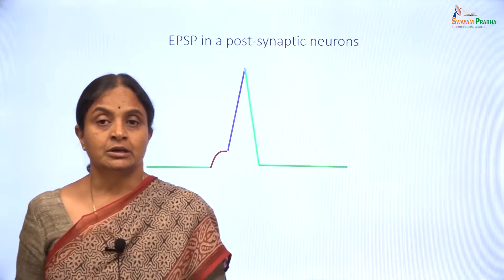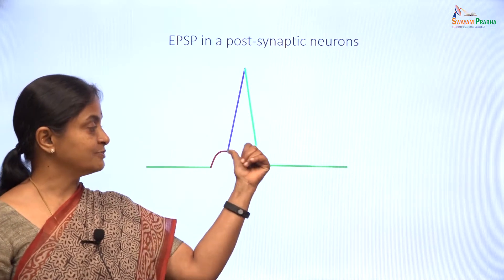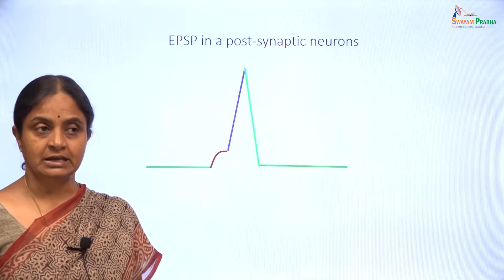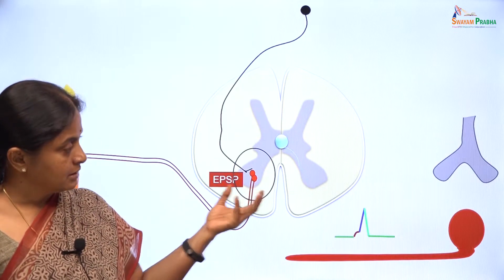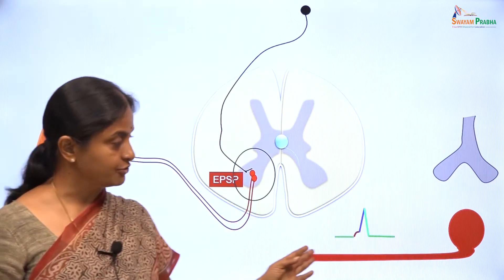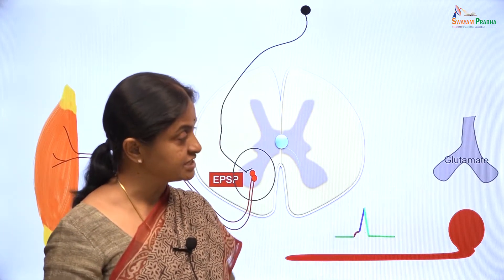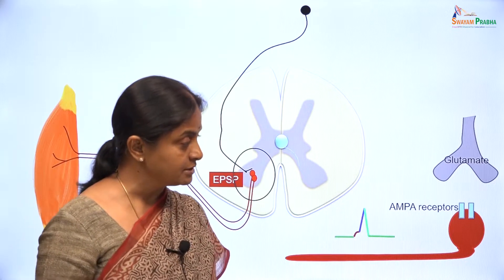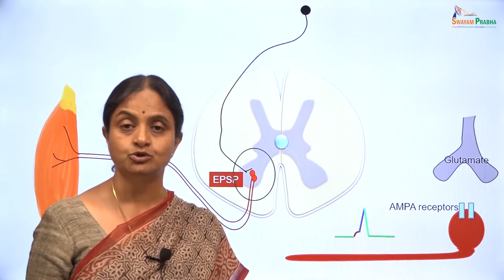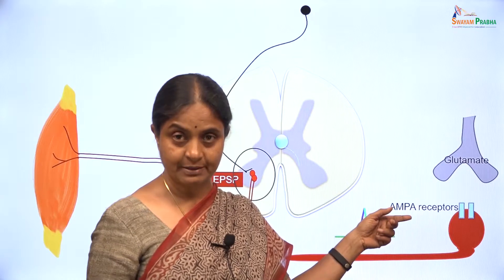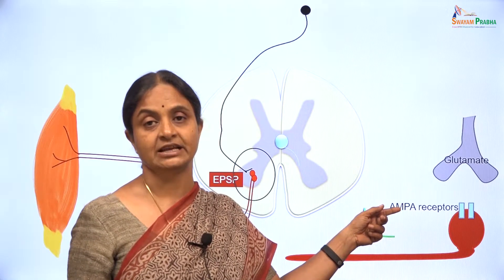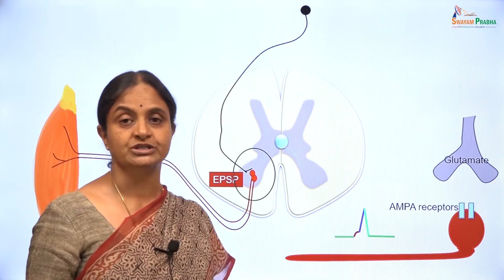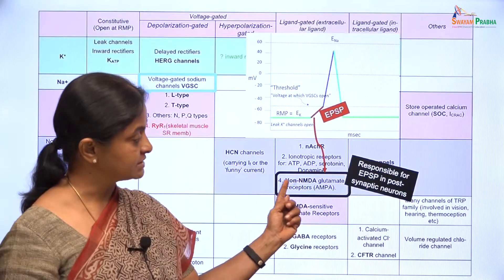We will now move on to action potential in a post-synaptic neuron — specifically the foot of the action potential — what is called the excitatory post-synaptic potential in this case. This is a synapse; that is the pre-synaptic neuron and here is the post-synaptic neuron. In excitatory synapses, the neurotransmitter released by the pre-synaptic neuron is glutamate, and that would bind to glutamate receptors on the post-synaptic neuron. There are two types of ionotropic glutamate receptors: the non-NMDA or AMPA receptors and the NMDA receptors. The AMPA receptors are non-specific monovalent cation channels like the nicotinic acetylcholine receptor, and when glutamate binds to those channels, the channel opens and that is responsible for the early depolarization in a post-synaptic neuron. So that is the AMPA receptor.